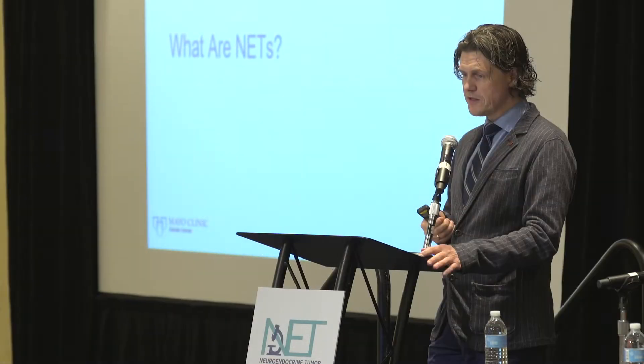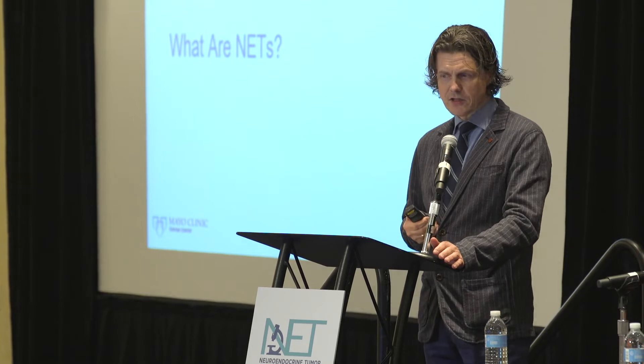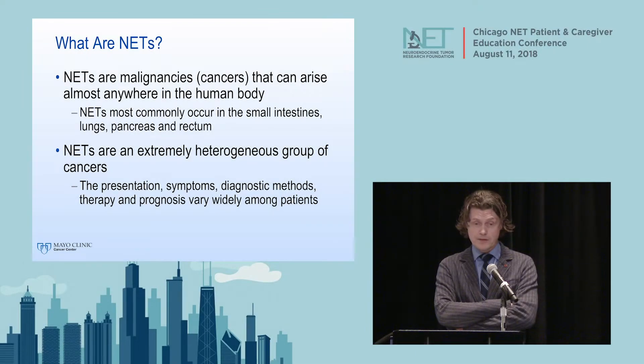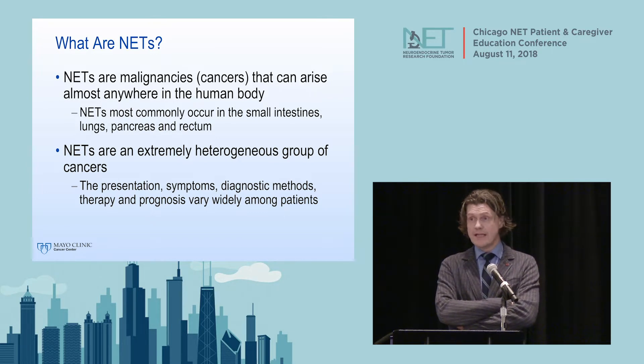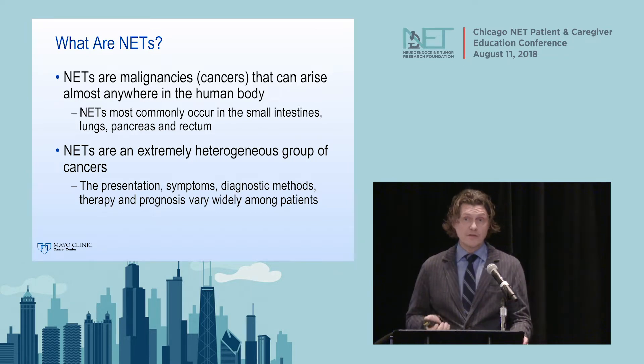Let's start with the very basics: what are neuroendocrine tumors, or NETs? NETs are malignancies—essentially cancers—that can arise almost anywhere in the human body. They are thought to arise from cells of the diffuse endocrine system, and most commonly occur in the small intestines, lungs, pancreas, and rectum. They are an extremely heterogeneous group of tumors that can be very slowly growing, and they can present in a variety of ways, which is one of the things that makes them so difficult.